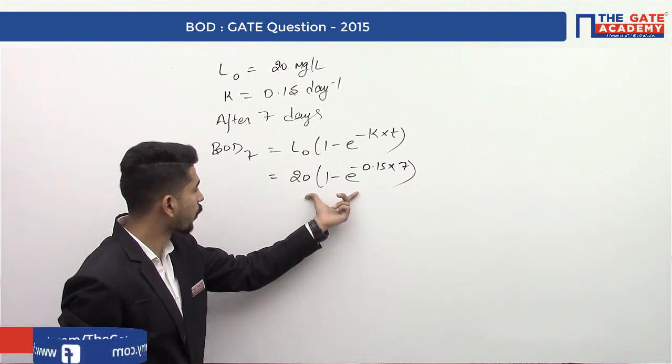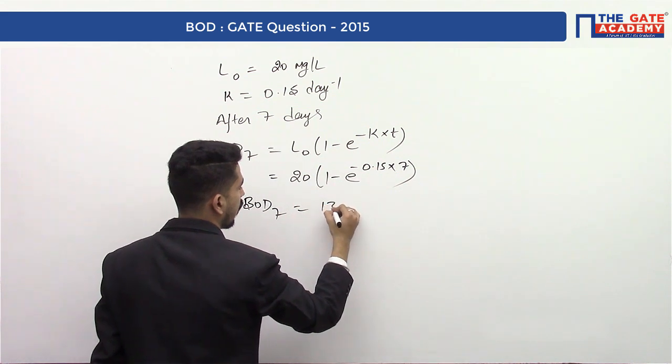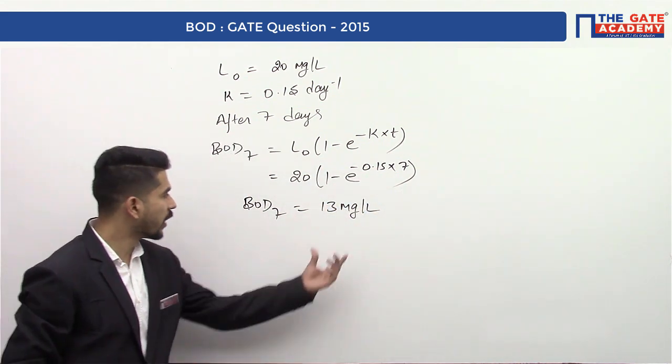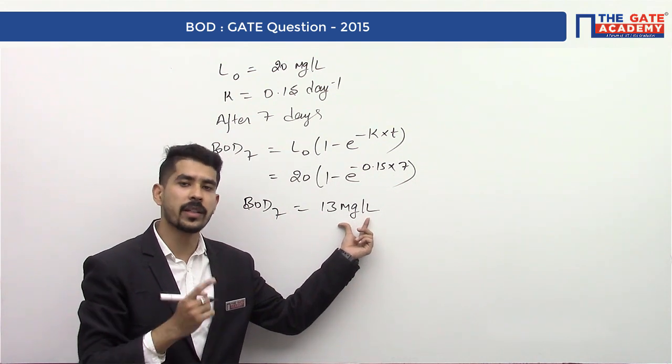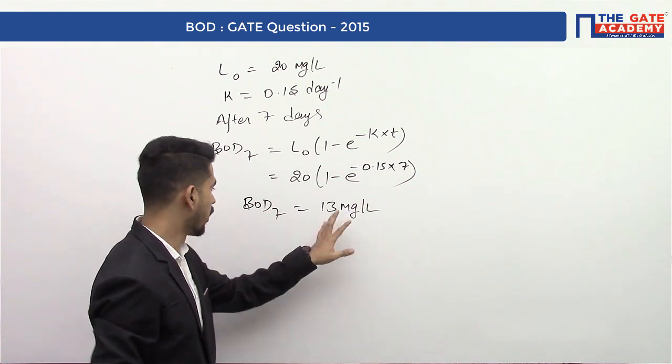From here we will get BOD7 as 13 milligrams per liter. But he is not asking us this value, he is asking in percentage and what is the percentage of BOD which is exerted.